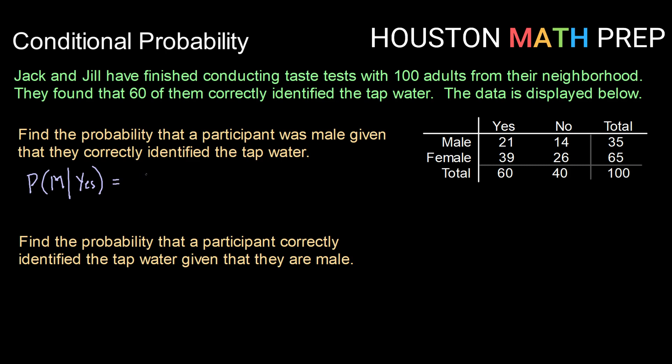A couple different ways we can do that. We can use our formula that says this would be the probability of a participant being male and correctly identifying divided by the probability of correctly identifying. But also that would be the same thing if we're given a table: the number of male who correctly identified divided by the number who correctly identified.